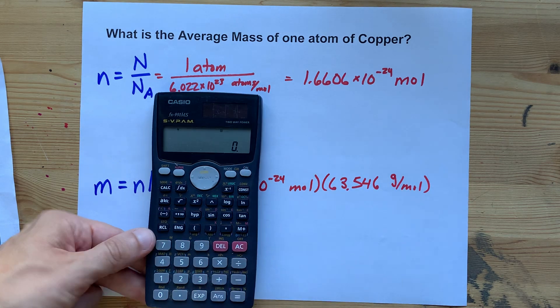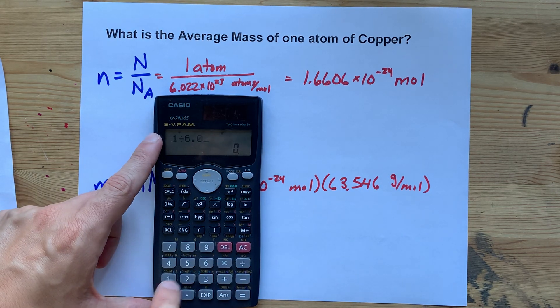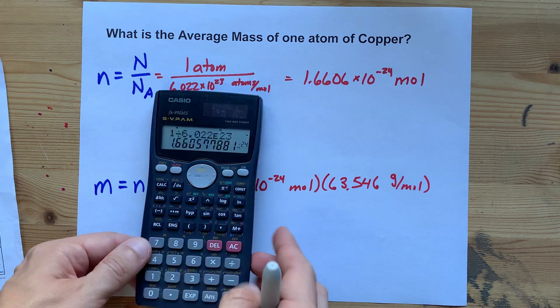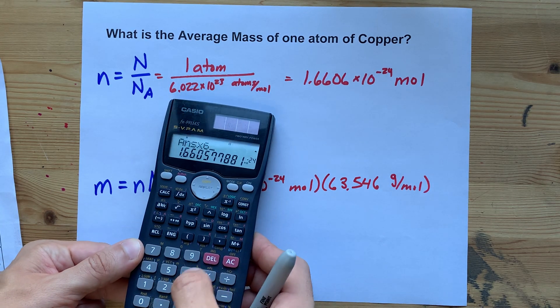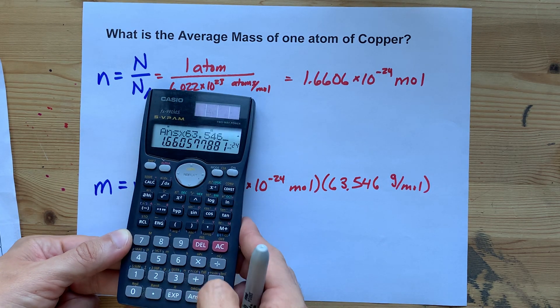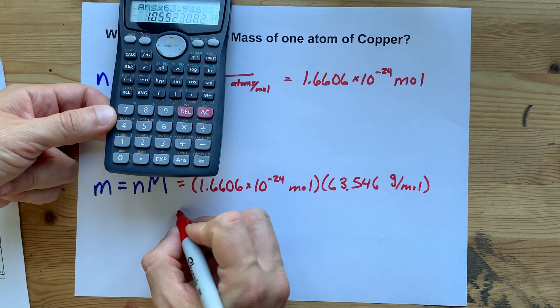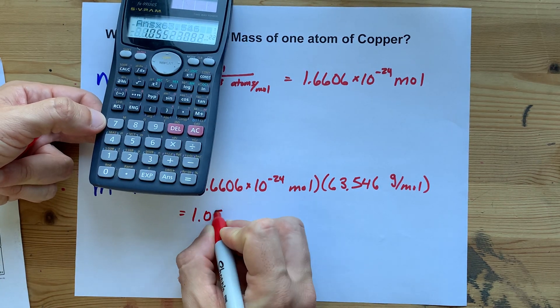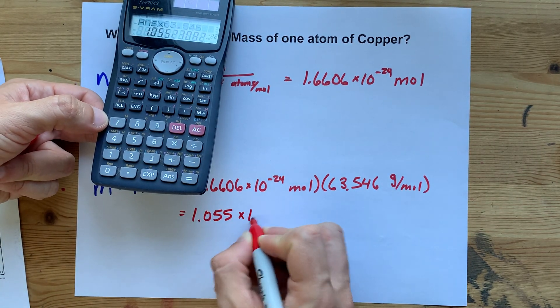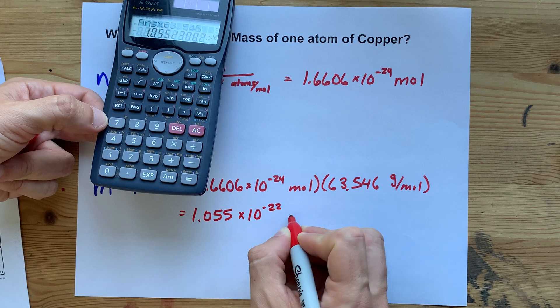Oh, I typed plus. I'm a fool. Better get that number again. Times 63.546. Bam. That gives me 1.055 times 10 to the negative 22 grams.